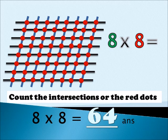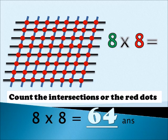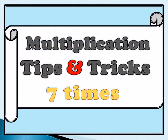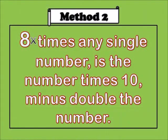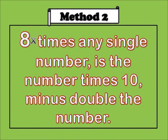Are you ready for the next method? We have eight times eight equals to 64. Eight times eight equals to 64. Now we have multiplication tips and tricks: eight times any single number is the number times ten minus double the number.